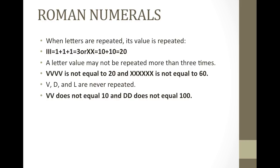When letters are repeated, their value is repeated. So iii equals 1 plus 1 plus 1, which is 3; or xx equals 10 plus 10, which is 20. A letter value may not be repeated more than three times. So vvvv is not equal to 20, and xxxxxxxx is not equal to 60. V, d, and l are never repeated: vv does not equal 10, and dd does not equal 100. If you have a vv, theoretically it would be 10, but there's an easier way to write 10, which is just x, and there's an easier way to write 100, which is c. So we always want to go the easier route with Roman numerals.